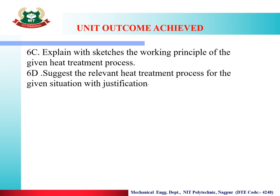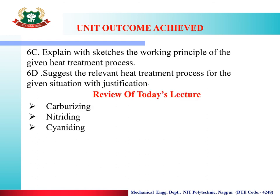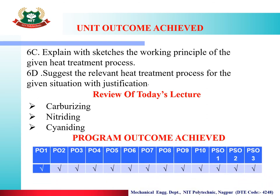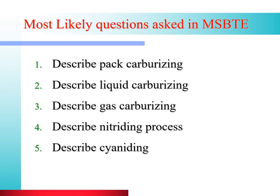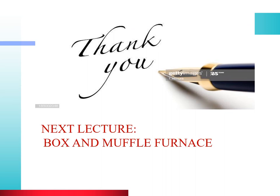These are the unit outcomes achieved: explaining with neat sketches the working principle of a given heat treatment process, and suggesting the relevant heat treatment process for a given situation with justification. In today's lecture we have learned about carburizing process, nitriding process and cyaniding process. Most likely exam questions include: describe pack carburizing, liquid carburizing, gas carburizing, nitriding and cyaniding. In the next lecture, we are going to learn about box and muffle furnace. Thank you very much, stay home, stay safe.